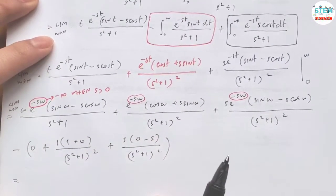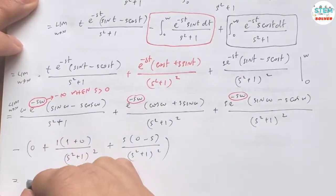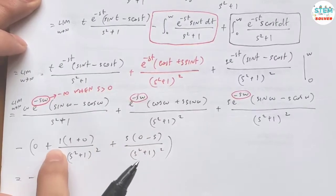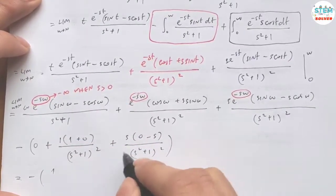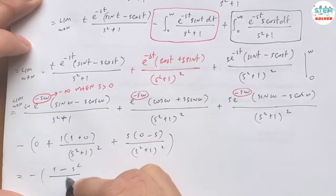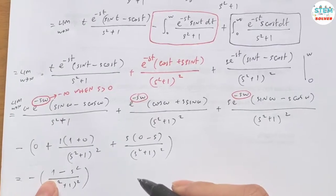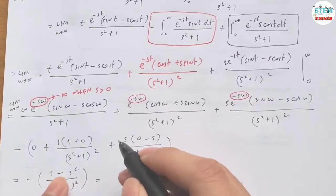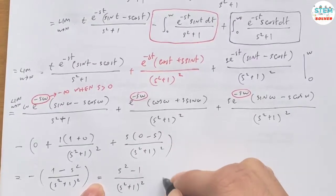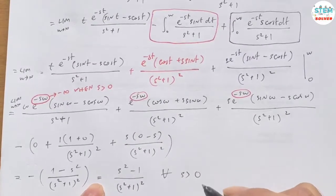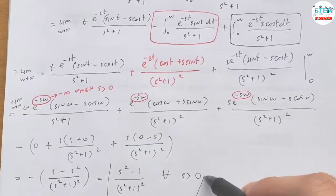Our final answer after taking the limit and distributing the negative sign is: (s² - 1) / (s² + 1)², for s greater than zero. That is the Laplace transform of t·cos(t).